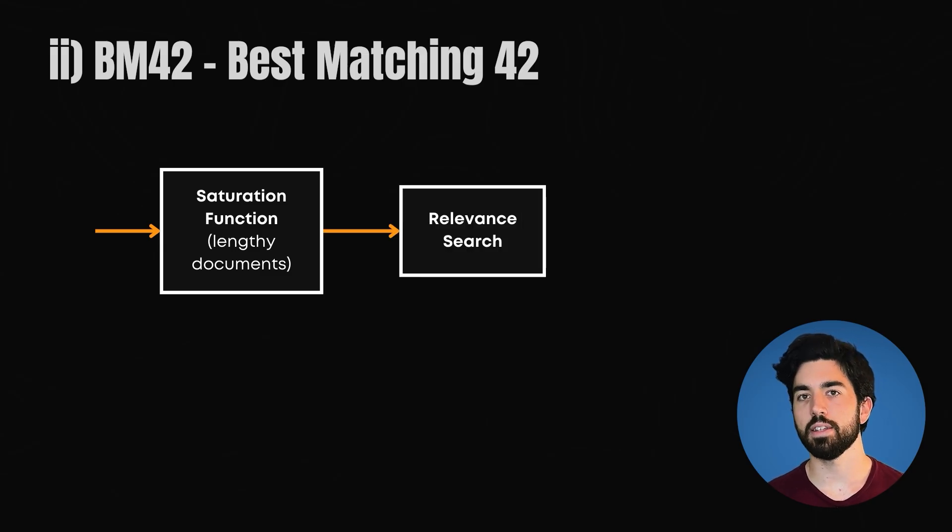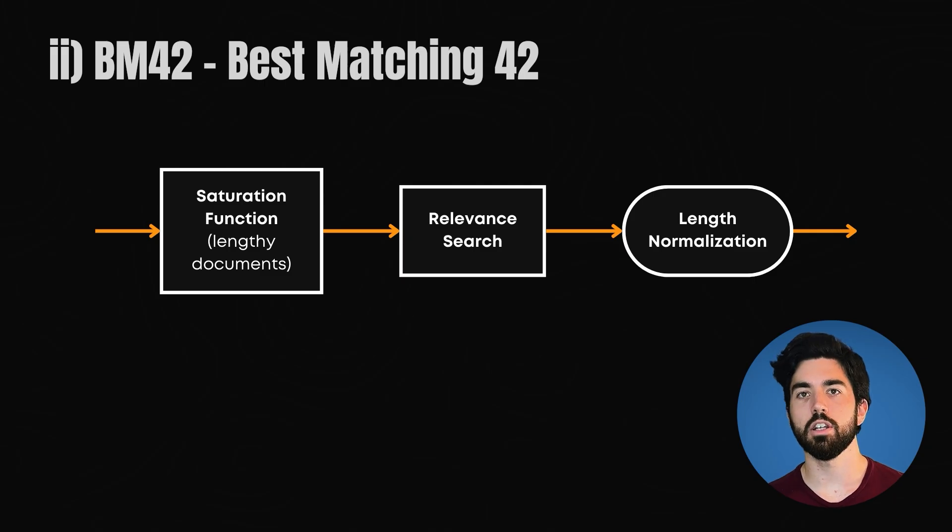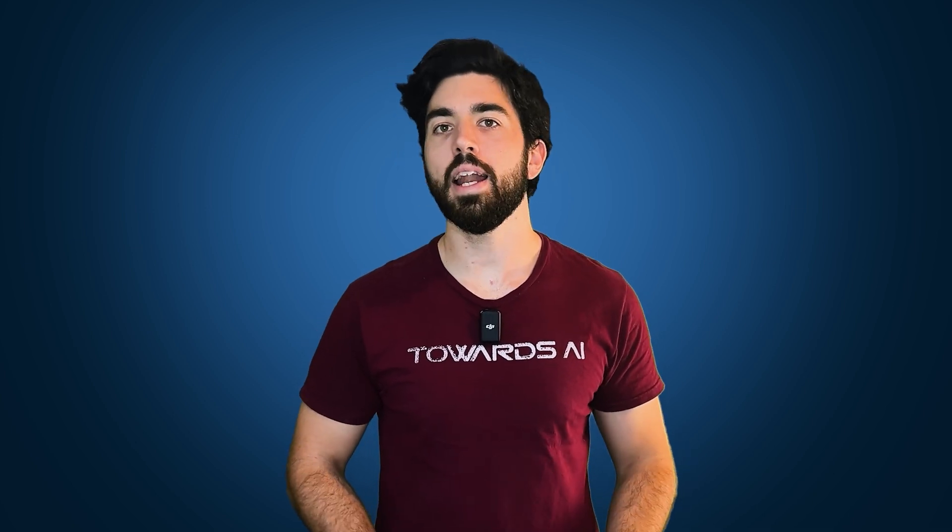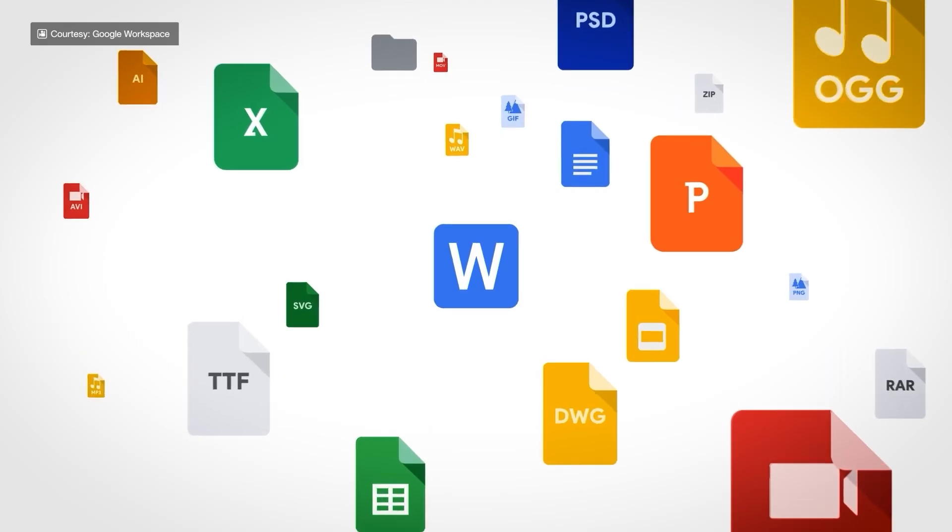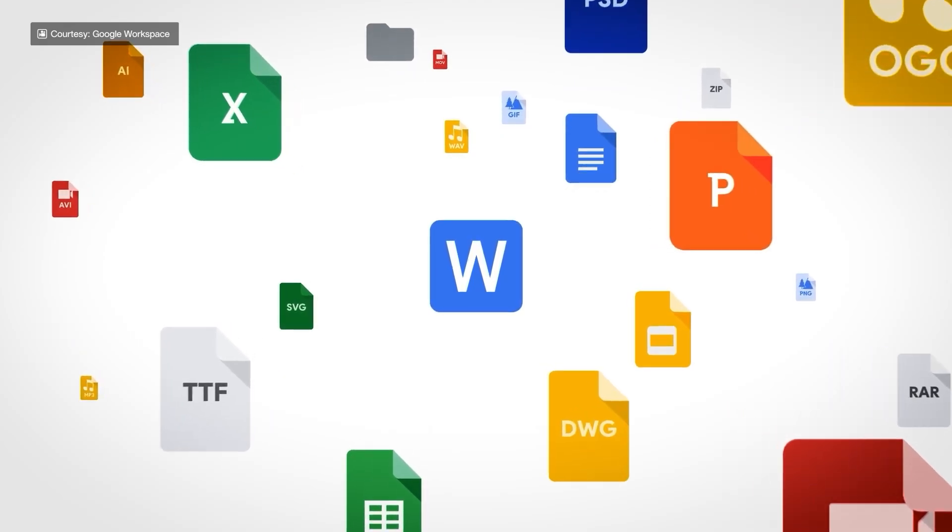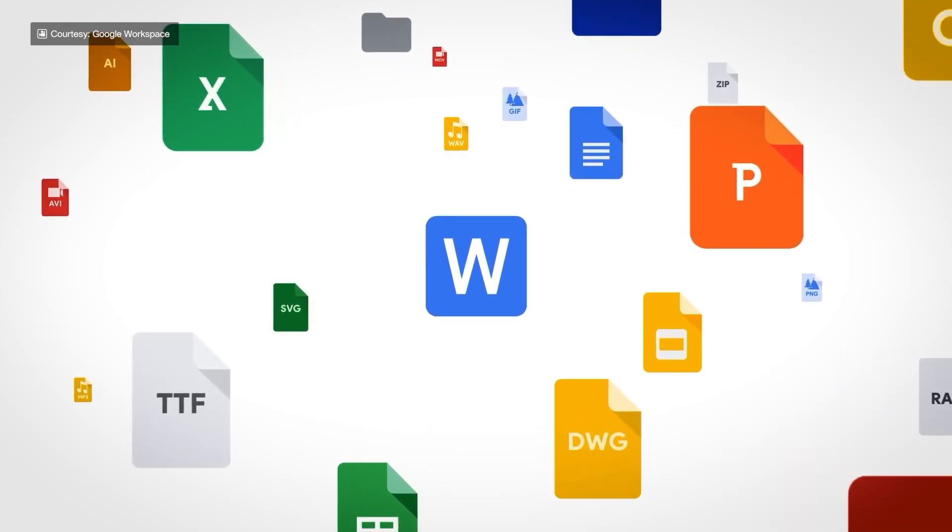It also has a more effective method for dealing with query terms that don't appear in a document. Instead of simply penalizing the document, BM42 considers other factors, like the overall context or related terms, to better assess the document's relevance. Lastly, it introduces a length normalization component that's more adaptable across various types of content. So BM42 basically aims to maintain BM25's strength while addressing its weaknesses, particularly for modern web-scale document collections where document length can vary drastically.